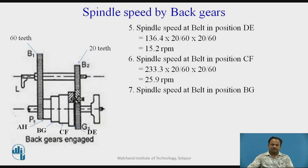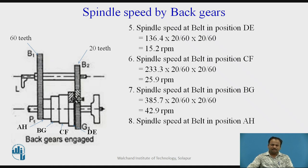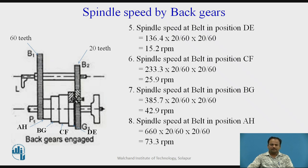Spindle speed at belt position BG with back gear: the third cone pulley speed was 385.7 rpm × 20/60 × 20/60 gives us 42.9 rpm — that is the seventh speed. And the eighth speed, spindle speed at belt position AH with back gear: 660 × 20/60 × 20/60 gives us 73.3 rpm. This is the highest speed when the back gear is attached. Thus eight speeds can be obtained and arranged for the spindle according to requirement.